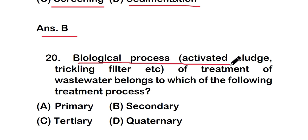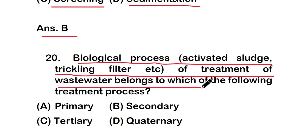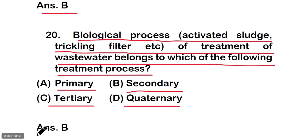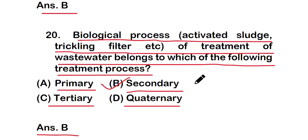Question twenty: biological processes such as activated sludge and trickling filters belong to which treatment process? Options: primary, secondary, tertiary, or quaternary treatment. The right answer is option B — biological processes of wastewater treatment belong to the secondary treatment process. These are all 20 questions of part one of this environmental microbiology series. Thank you for watching.